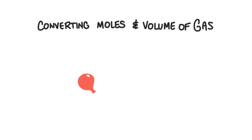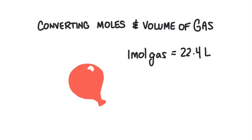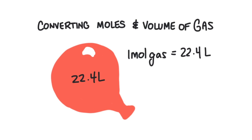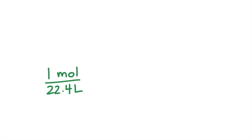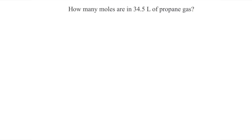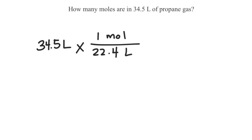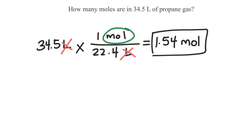Finally, we need to be able to convert between the volume of a gas and moles. We can't easily take the mass of a gas in the laboratory, but we can measure its volume. The cool thing about a gas is that a mole of any gas, no matter what kind, will have the same volume: 22.4 liters. So we can write the conversion factor as 1 mole per 22.4 liters or 22.4 liters per 1 mole. How many moles is in 34.5 liters of propane gas? We take 34.5 liters and multiply it by 1 mole over 22.4 liters, and we get an answer of 1.54 moles.